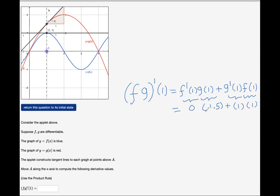Notice zero times 1.5 is zero. 1 times 1 is 1. This is what you are supposed to type here.